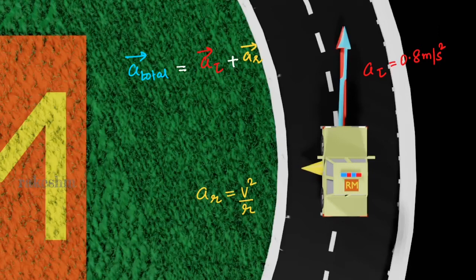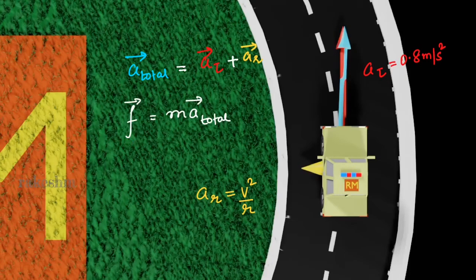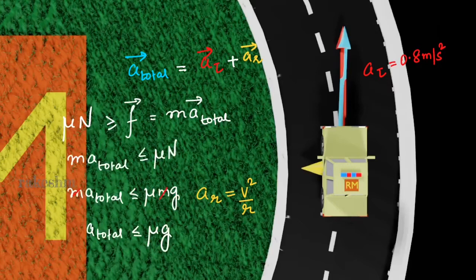Can you think which force actually provides this acceleration to the car? It is the friction force between the car tires and the road. So friction here is helping the car accelerate. We can write: frictional force = mass × total acceleration. This static friction is less than or equal to μN, where μ is the coefficient of friction and N is the normal reaction. So m·a_total ≤ μ·N, and since N = mg, we cancel m and get a_total ≤ μg.